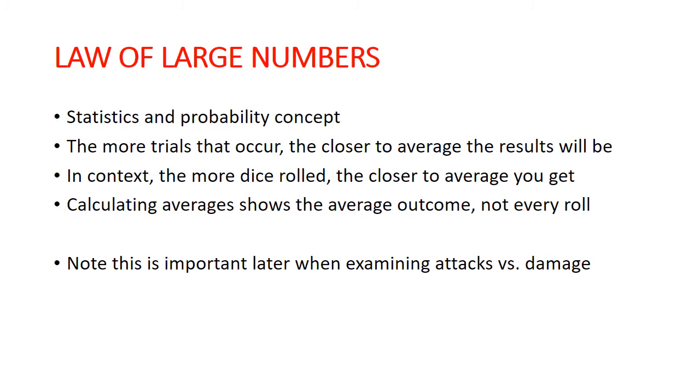So I mentioned before law of large numbers, and this is a statistics and probability concept. Essentially, the idea is when you have a probabilistic event like rolling dice, which is the most common example that you'll ever get in a statistics and probability class, you're going to get this concept going that the more trials that happen, the closer the average outcome is going to be to the mathematical average.